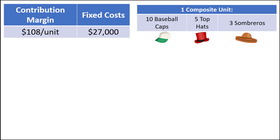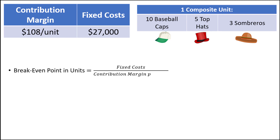Any formulas that you might use in the single unit case now apply to a composite unit. Let's calculate the breakeven point in units assuming that fixed costs are $27,000. The breakeven point in units is equal to the fixed cost divided by the contribution margin per unit. In our example, that's $27,000 divided by $108 per unit, which equals 250 composite units.